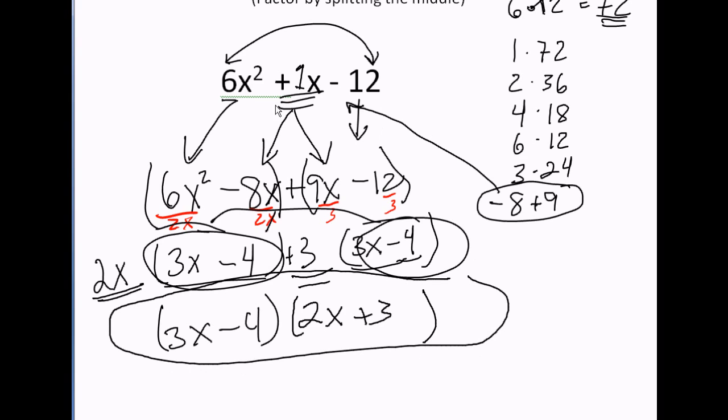We're done. This is the factor. 6x squared plus 1x minus 12 equals 3x minus 4 times 2x plus 3. If I FOIL this, I will end up with this as my answer.